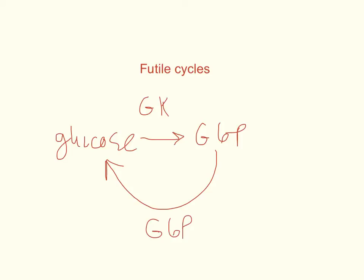For example, when we have glucose, I'm going to put glucose here, and it gets converted into glucose 6-phosphate by a glucokinase, so I'll just put GK, glucokinase, and it gets converted back into glucose by glucose 6-phosphatase.